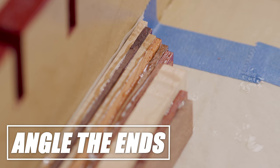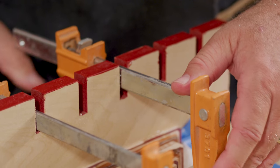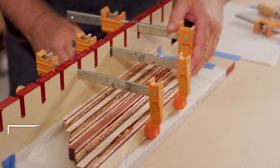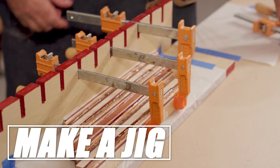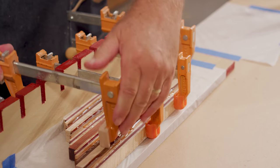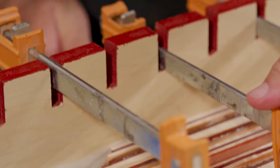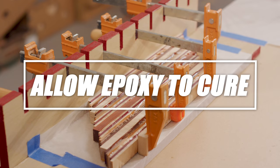Angle the ends of the strips to minimize waste when miter cutting later. To speed up the work of making numerous blanks, make a simple jig to support and align the strips. Clamp the pieces together keeping the top and bottom surfaces flush. Use wax paper to protect your work surfaces. Allow the epoxy to cure overnight before removing the clamps.